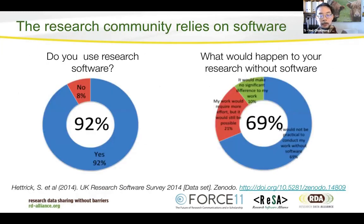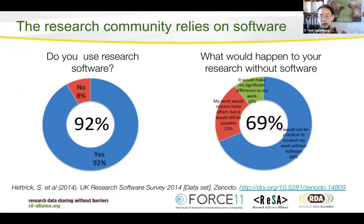Increasingly, the research community relies on software. We did some work at the Software Sustainability Institute seven years ago, polling people to find out how much software affected their work. The key finding was that even back then, about 70% of researchers said it wouldn't be practical to conduct their work without using software. So software is everywhere.